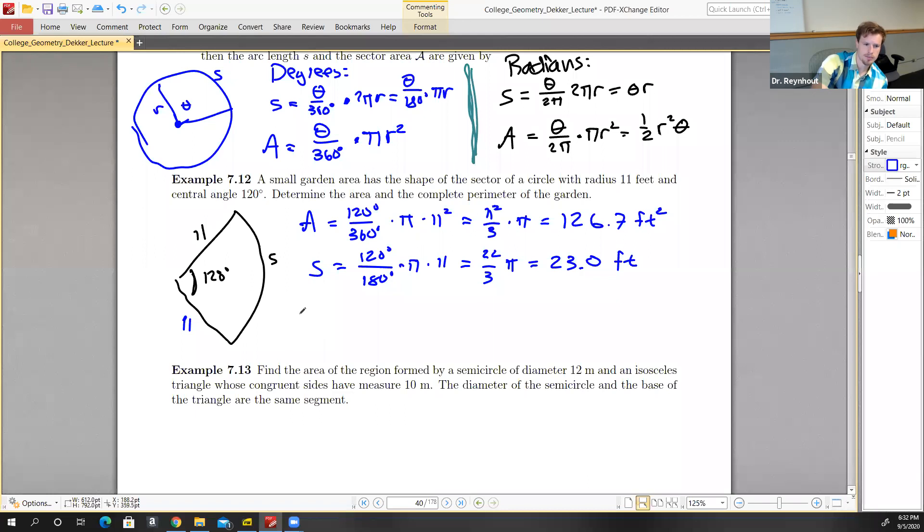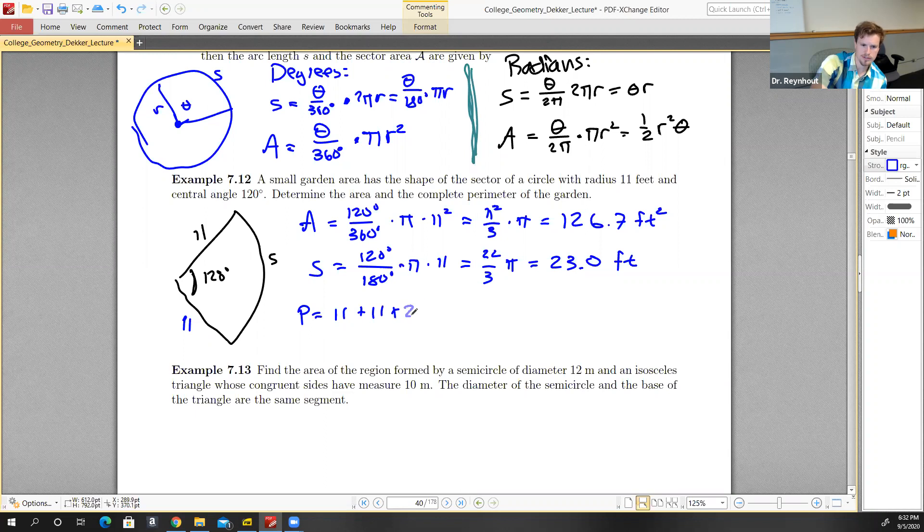Then the perimeter would be equal to 11 plus 11 plus 23, which is 45 feet. This gives us our area and our perimeter.